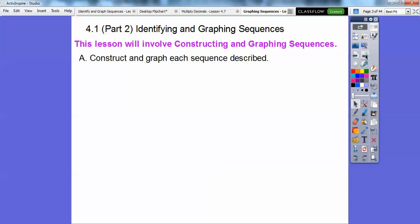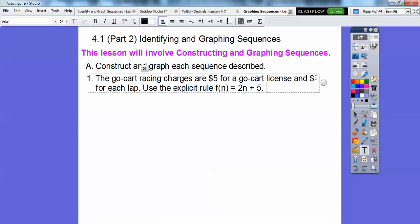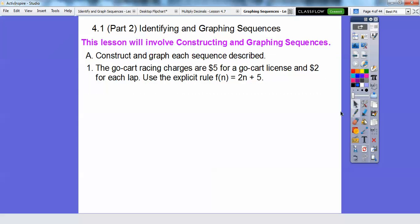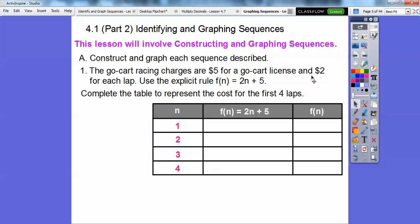Let's construct and graph each sequence described. Remember the go-kart racing charges thing that we did in the last lesson? The go-kart racing charges are $5 for a go-kart license and $2 for each lap. So what we're going to do is use the explicit rule f(n) = 2n + 5. We're going to build a chart. So we're going to complete this table and only do it for 4 laps. 1 lap, 2 lap, 3 lap, 4 lap.